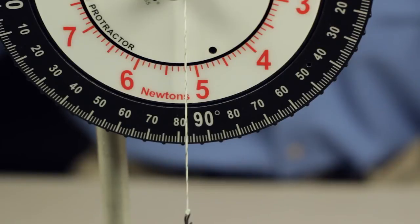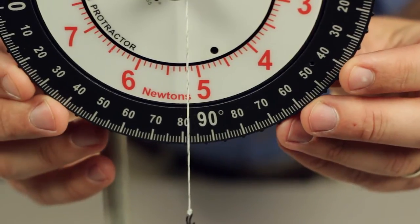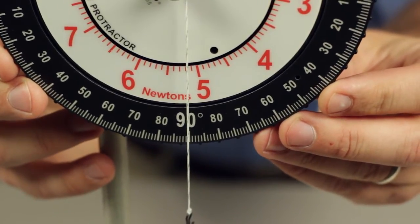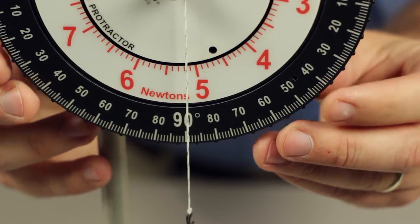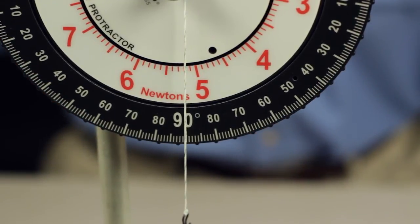Even if the tension protractor is not plumb after being mounted, its degree scale can be adjusted to read 90 degrees vertically by rotating the outer ring until the string with hanging mass aligns with the 90 degree marker.